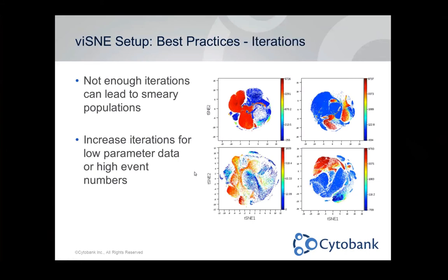There are a few more advanced settings. First, iterations: a thousand is the default. If you have fewer parameters — roughly below six or seven — or many more than 100,000 events (half a million, a million, two million), it's a good idea to increase iterations. Otherwise your data will look smeary and poorly resolved. Increasing iterations gives Visne the best chance possible to separate your populations.